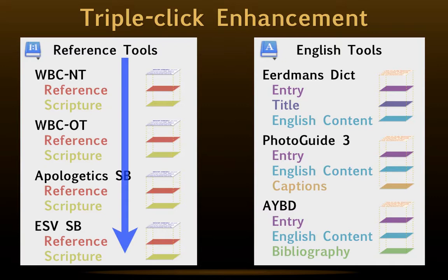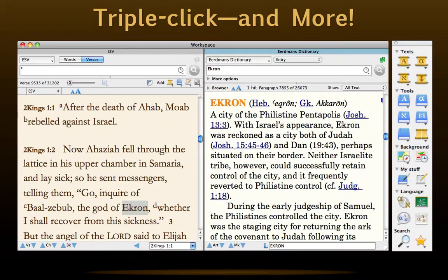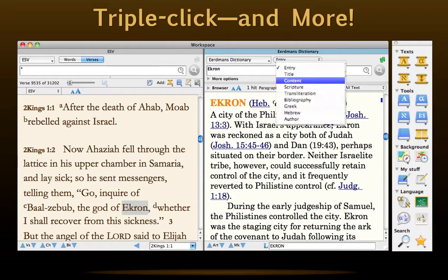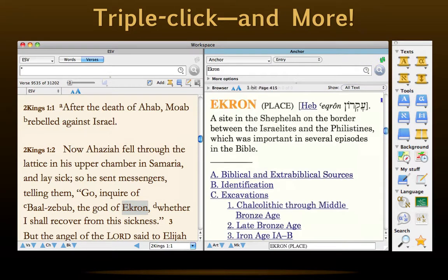Triple-clicking a word will also search the top 10 tools in the language category, this time searching the top three relevant fields, even if they vary from tool to tool. In this example, triple-click found an article on Ekron in the very first field of the very first tool. If more information is needed, you can continue by selecting a different layer in the same tool or a different tool with the same field, and just click Search. You can repeat it as often as desired, and since the search term is persistent, this technique is a breeze.